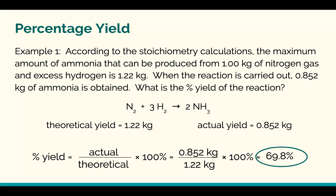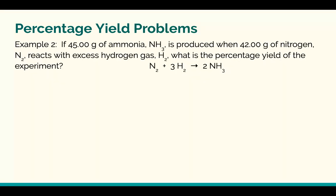It doesn't actually matter what the units are for mass, as long as they are the same unit — they'll cancel out. So that's the calculation for percentage yield. But often with percentage yield questions, you first have to actually calculate the theoretical yield. So let's look at some of those examples.